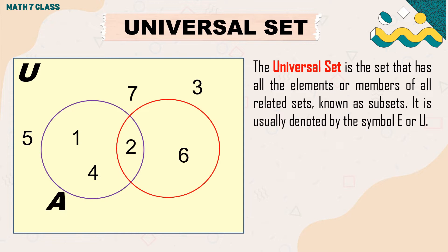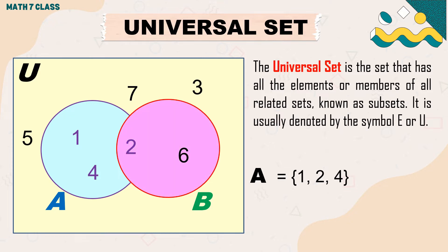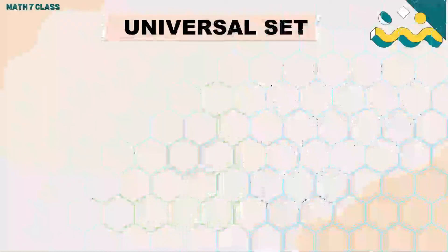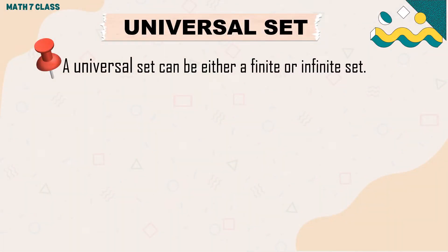The elements of subset A are 1, 2, and 4. The elements of subset B are 2 and 6. The elements of the universal set are 1, 2, 3, 4, 5, 6, and 7.